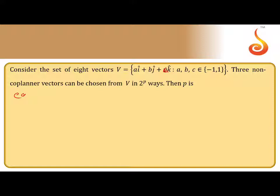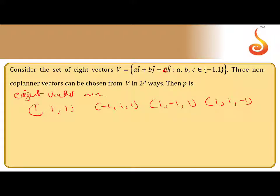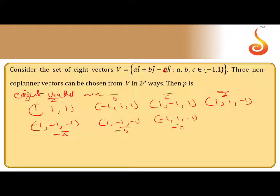The eight vectors are: a=(1,1,1), b=(1,-1,1), c=(1,1,-1), d=(1,1,1) — let us call them a-bar, b-bar, c-bar, d-bar. So we can take another four vectors where all components are negated: -a=(1,-1,-1), -b=(-1,1,-1), -c=(-1,-1,1), -d=(-1,-1,-1). So these are the eight vectors.